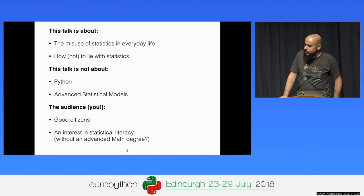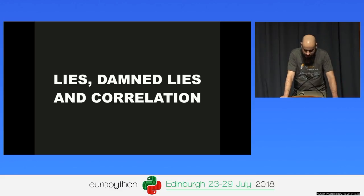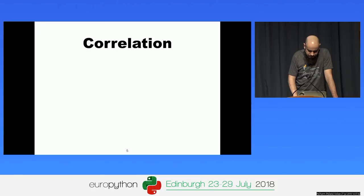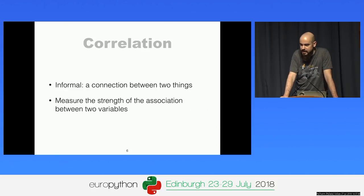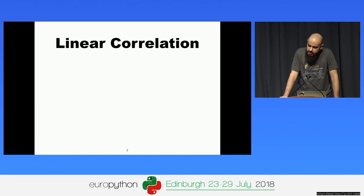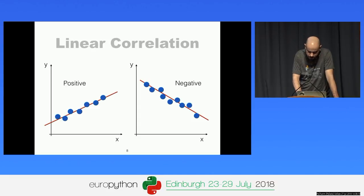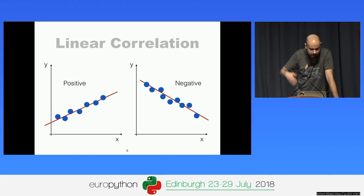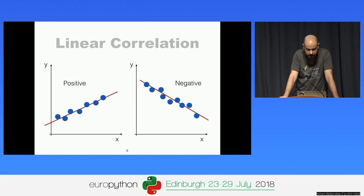With these statements there are two problems — one we'll discuss later, and the other is correlation. Correlation, informally, is already in the name: it's some sort of relationship or connection between two things, two events, two variables. More formally, we want to measure the strength of this association. The simplest thing that comes to mind is linear correlation: when one variable increases, the other either increases or decreases following some sort of line — positive or negative linear correlation.